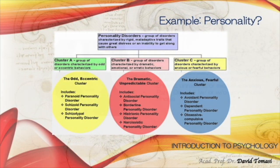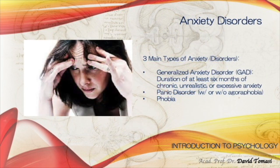Anxiety disorders occur when stress seems greatly out of proportion to the situation and is usually accompanied by avoidance. There are three main types: generalized anxiety disorder (GAD) involves at least six months of chronic, unrealistic, or excessive anxiety. Panic disorder, with or without agoraphobia, involves chronic anxiety with brief moments of sudden, intense, unexpected panic attacks. Phobias are the third type.